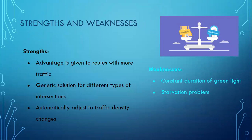In the end, we would like to show some strengths and some weaknesses of our system. Some advantages are that priority is given to routes with more traffic, generic solution for different types of intersections, and automatically adjusts to traffic density changes. Some weaknesses are that we have constant duration of green light and starvation problem. Those weaknesses could be removed by improvement of system in the future.